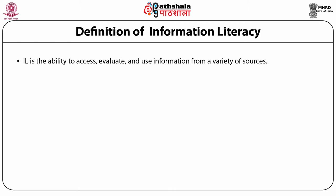The American Library Association Presidential Committee on Information Literacy defines information literate people as those who have learned how to learn. They know how to learn because they know how knowledge is organized, how to find information, and how to use information in such a way that others can learn from them. They are people prepared for lifelong learning because they can always find the information needed for any task or decision at hand. Information literacy is the ability to access, evaluate, and use information from a variety of sources.